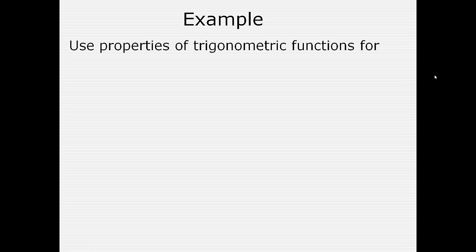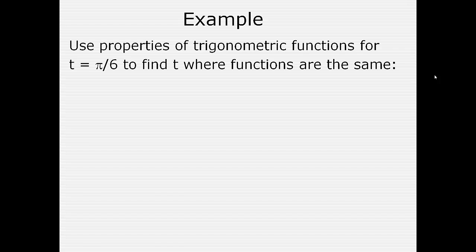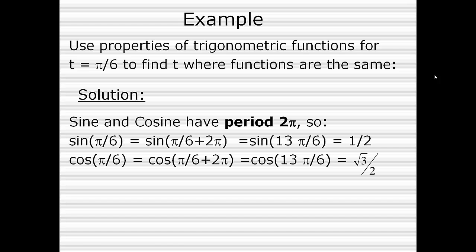Let's look at an example. We're going to use the properties of trigonometric functions for t equals pi over 6 — our input value at pi over 6, or 30 degrees — to find t where functions are the same. The sine and cosine have a period of 2 pi, so if we take pi over 6 and add 2 pi, we get a common denominator of 6: pi over 6 plus 12 pi over 6 gives us 13 pi over 6. At both pi over 6 and 13 pi over 6, the sine is 1/2.